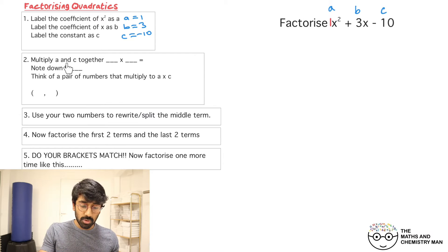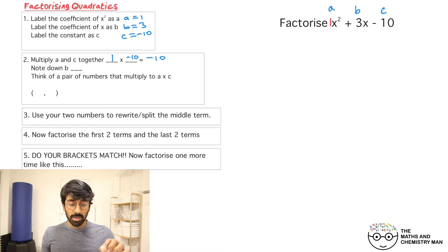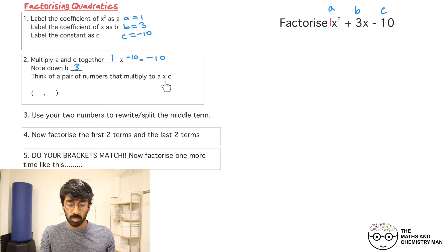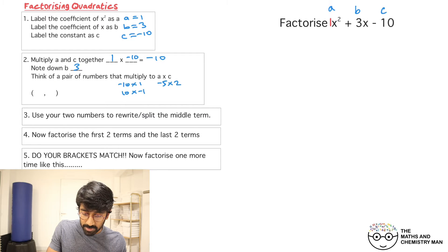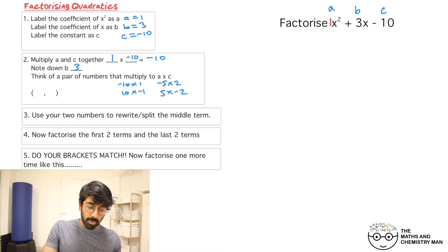Moving on to step two: multiply a and c together. a was 1, c was minus 10, so 1 times minus 10 is minus 10. Also note down what b is — b was 3. Now we need to think of pairs of numbers that multiply to give a times c, which was minus 10. So: minus 10 times 1, 10 times minus 1, minus 5 times 2, and 5 times minus 2.